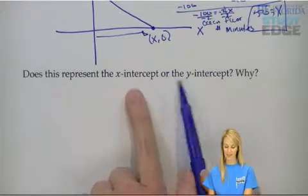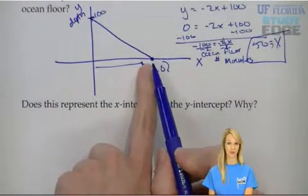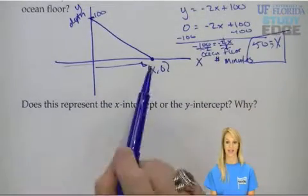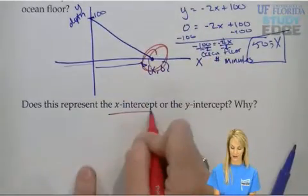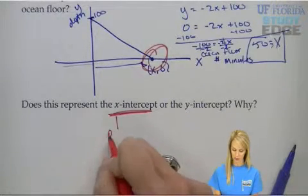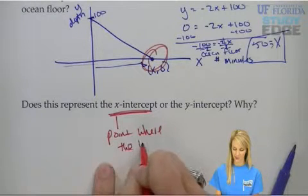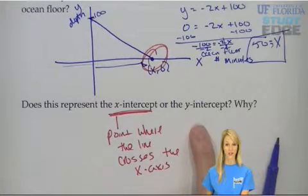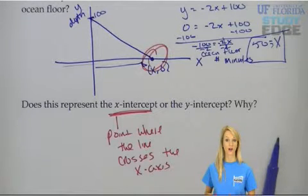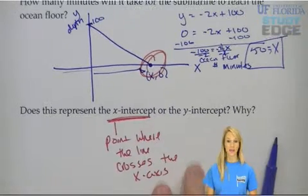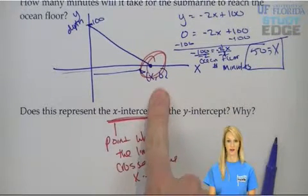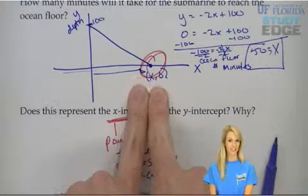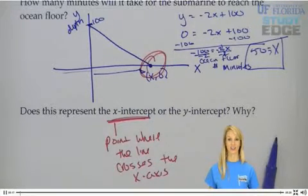Now, does this point represent the x-intercept or the y-intercept? The point where we're at 0 feet height — does it cross the x-axis or the y-axis? The x-intercept is the point where the line crosses the x-axis, and the y-intercept is where it crosses the y-axis. So the coordinate for our x-intercept is (50, 0). We finally get to the ocean floor after 50 minutes — x equals 50. If you have any questions about this one, just post them on the wall.